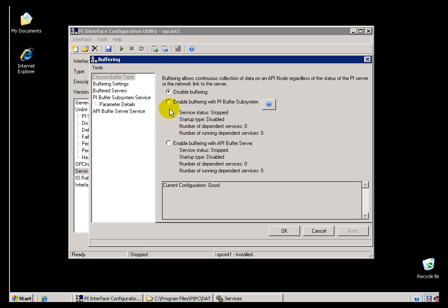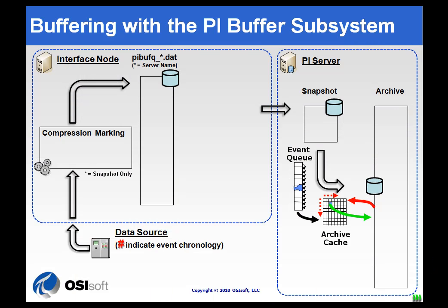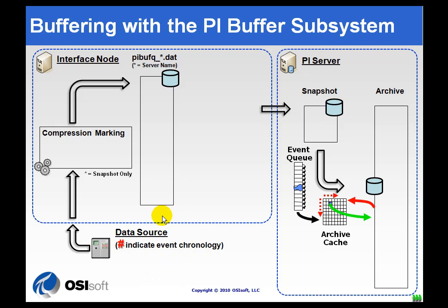In our next video, we'll go into the details of how you actually configure this. Now let's go into some of the details of how the Buffering Subsystem works — this is the more modern of the two. We've got a data source — a distributed control system, SCADA system, paper machine, or whatever source of real-time data. That data comes into the Interface Node, our interface is running there, and when we send the value to the PI Server with the PI Buffering Subsystem running, the Buffering Subsystem intercepts that data.